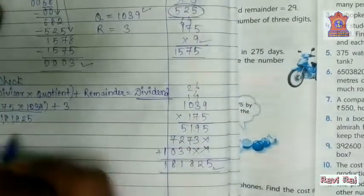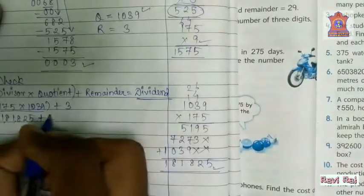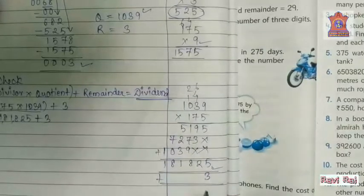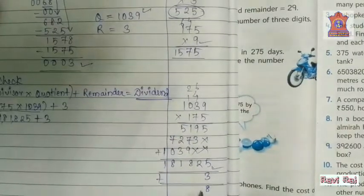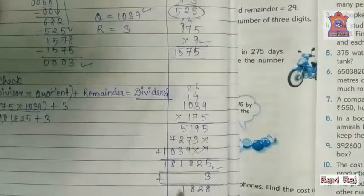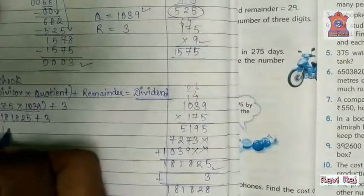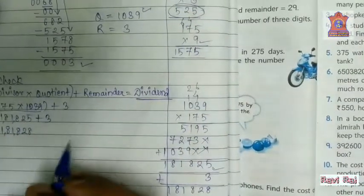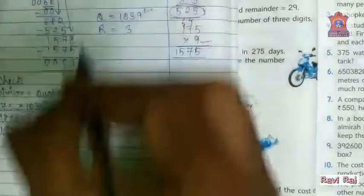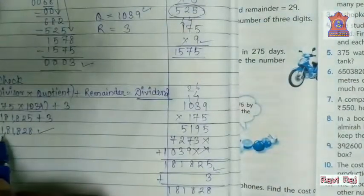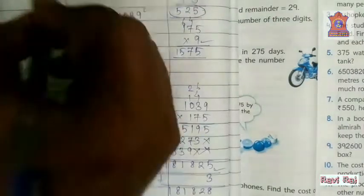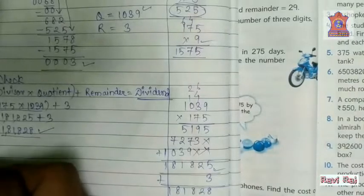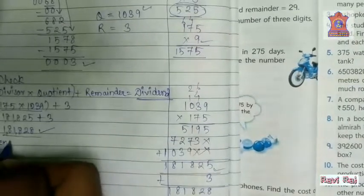After multiplying this, we have got 181825. Write it here. 5 plus 3 is 8, so we have got 181828. Now check whether this equals the dividend or not. Here 181828 is equal to the dividend. Hence verified.